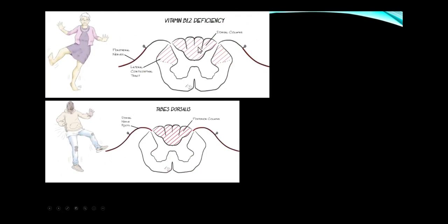B12 deficiency predominantly involves the posterior columns, causing falling from loss of proprioception. It also extends to the lateral corticospinal tract, giving some upper motor neuron findings, and patients often develop a peripheral neuropathy with stocking-glove features as well.